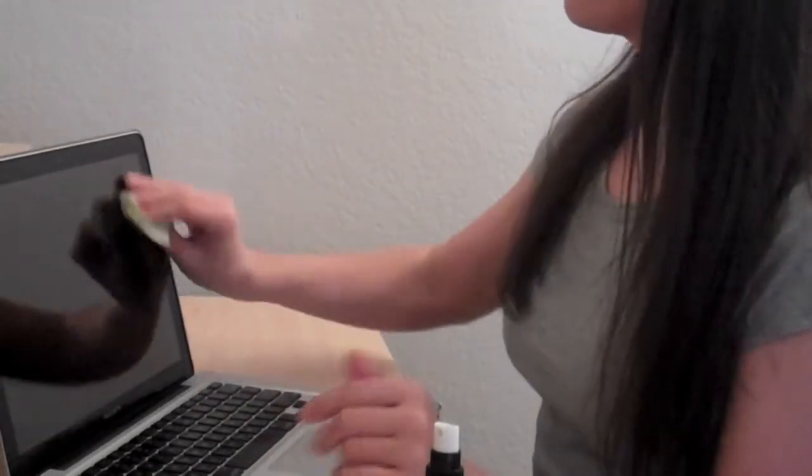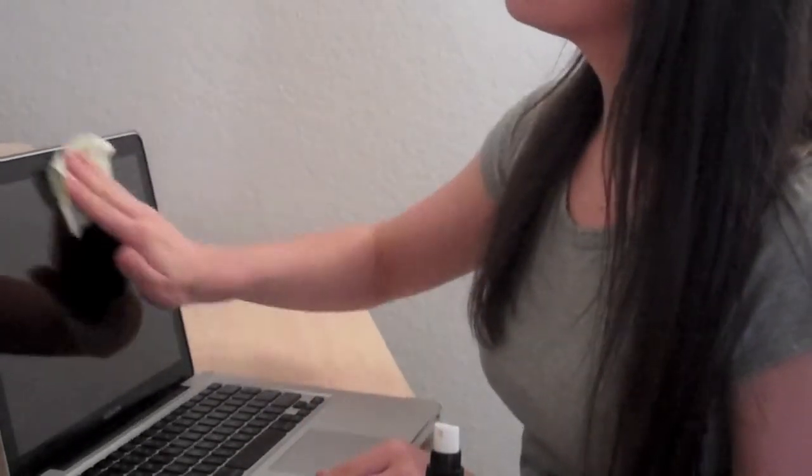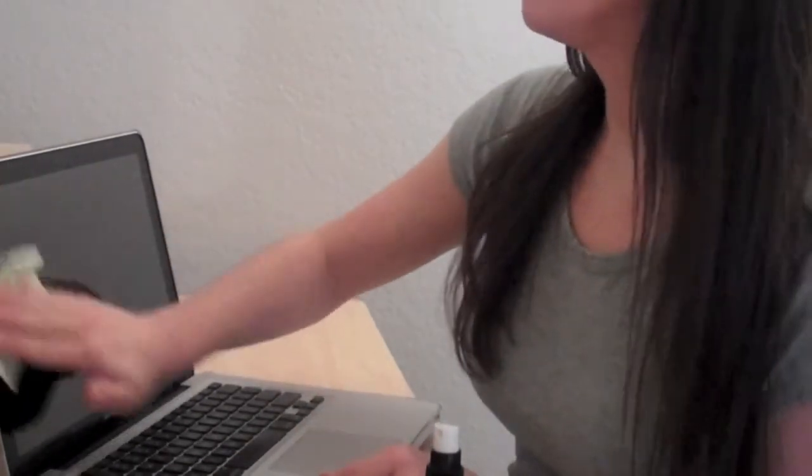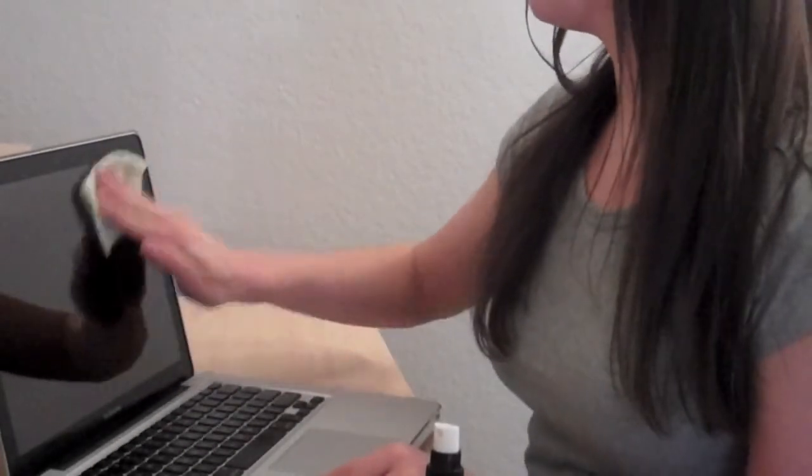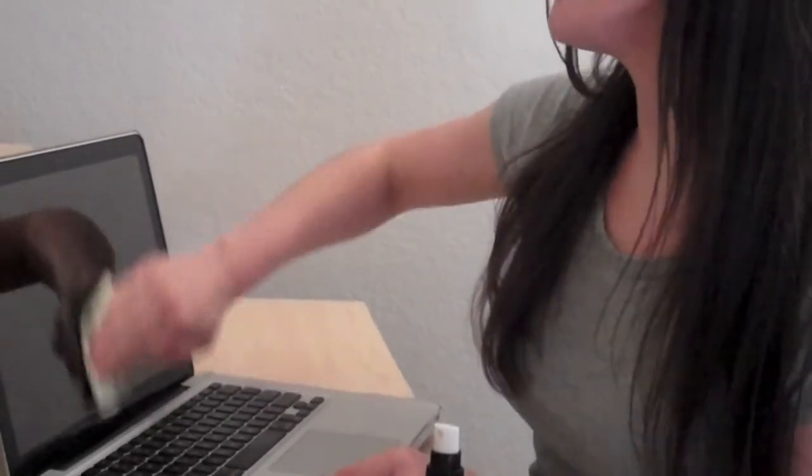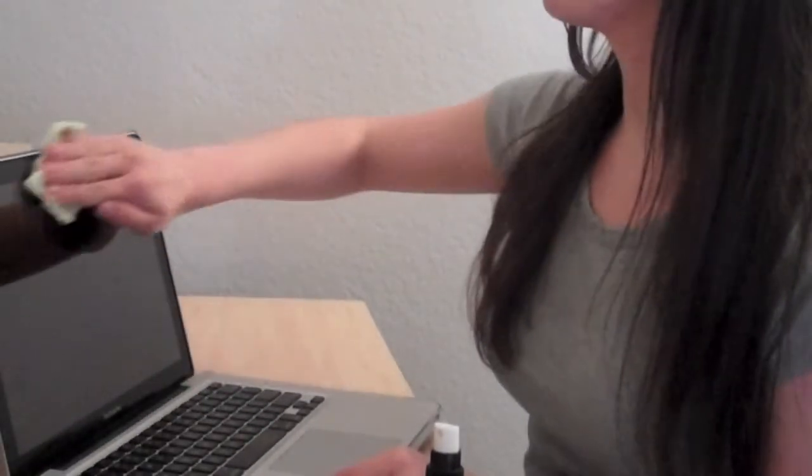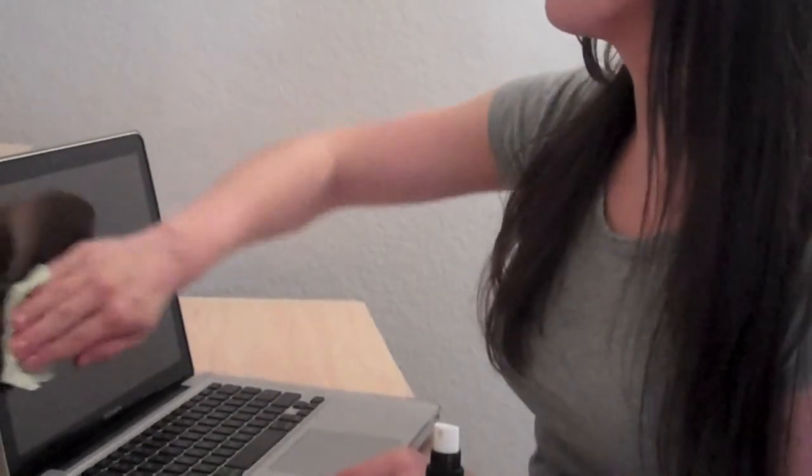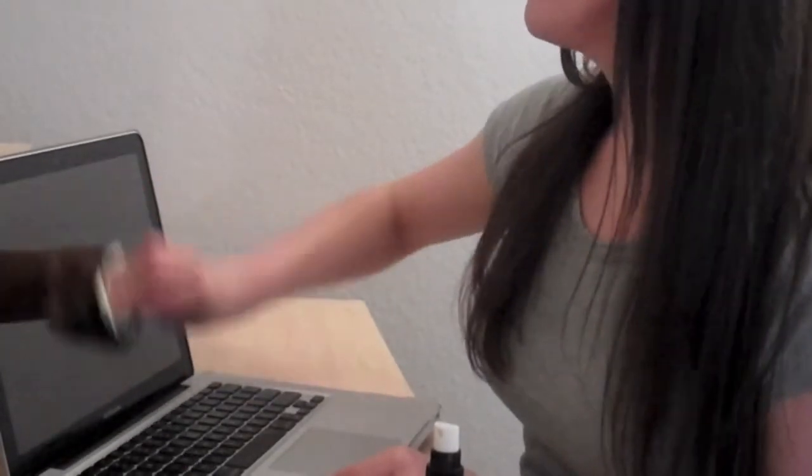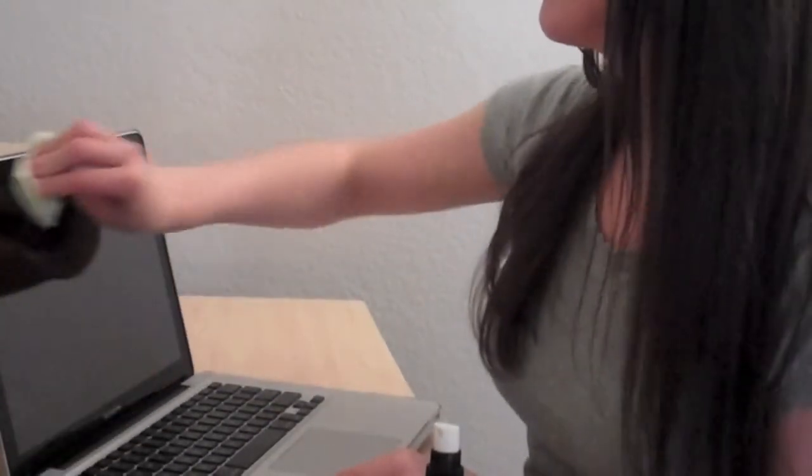If that looks okay, continue to do a circular motion through your whole screen. It's really best to do it when your computer is turned off because then you can see where the smudges really are because you can see the reflection a little bit better. Go ahead and give it a good clean.